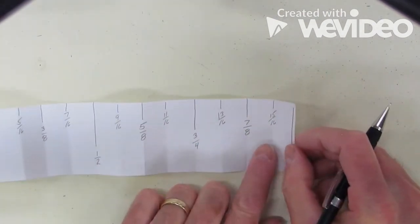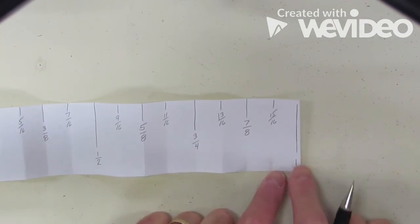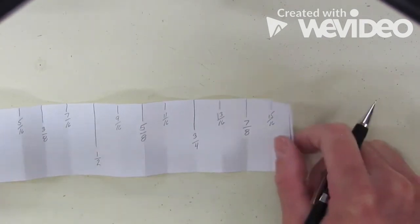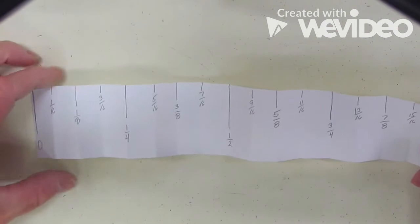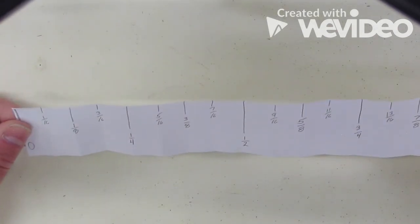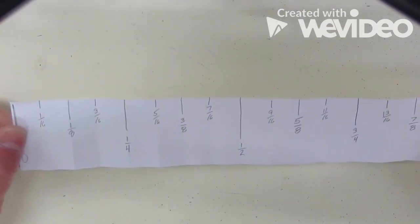Does that mean there's only 15 sixteenths in an inch? No, there's 16 sixteenths in an inch because that would reduce to a 1. So that is how we take our 1 inch and break it up into sixteenths, and we can label it in something big enough so we can see.